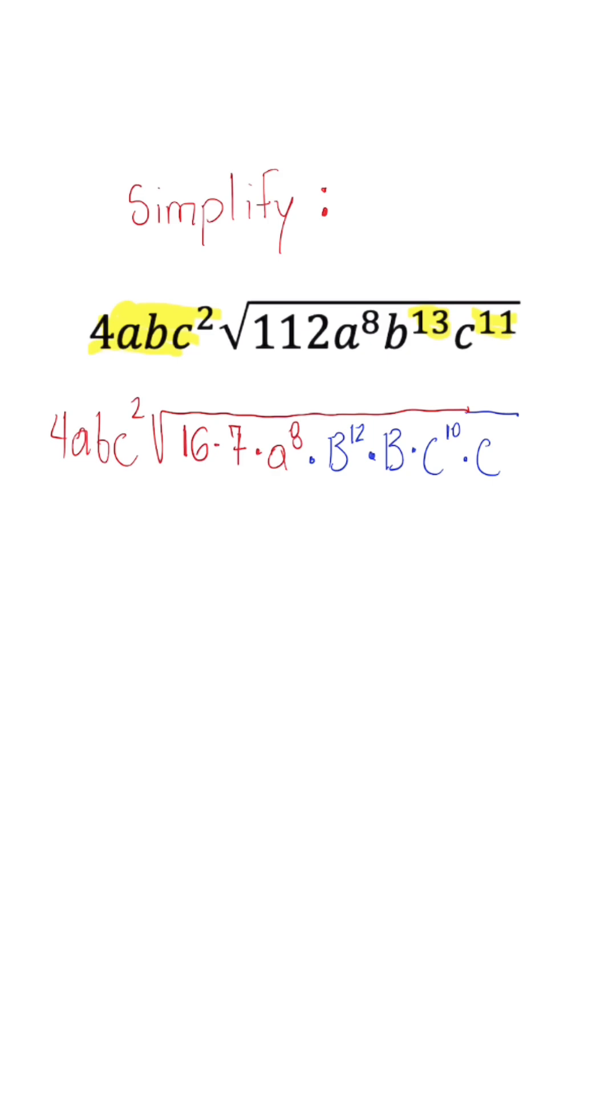So now once we go in, perfect square comes out. So we have 4abc squared times the square root of 16, which is 4. 7 is going to stay under because we can't simplify.